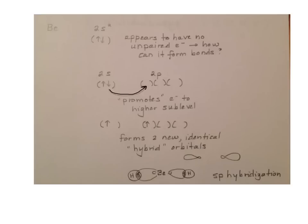It takes one of those electrons and promotes it up to the empty 2p sublevel. It promotes an electron to a higher sublevel. So now we have one electron in the 2s and one in the 2p. Now it has two unpaired electrons and can form two bonds.